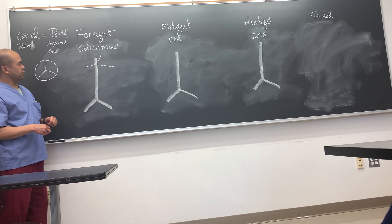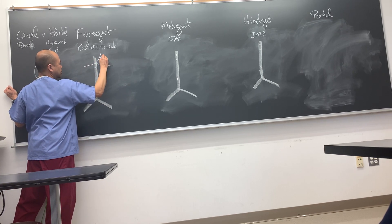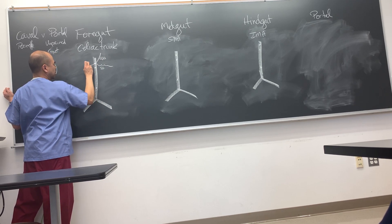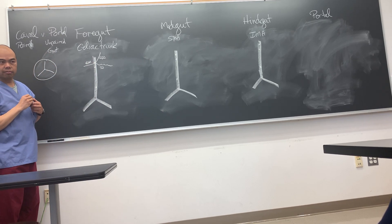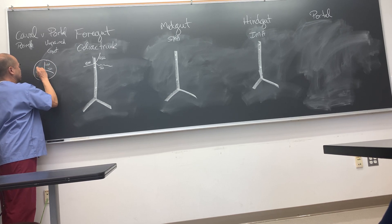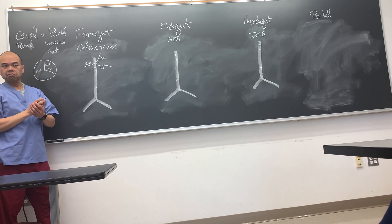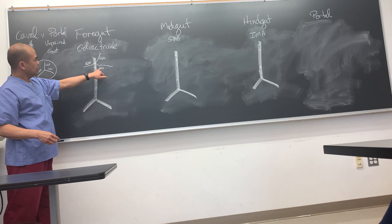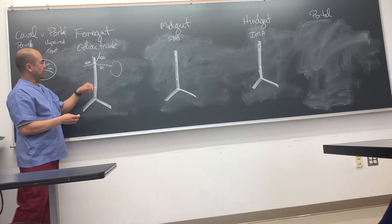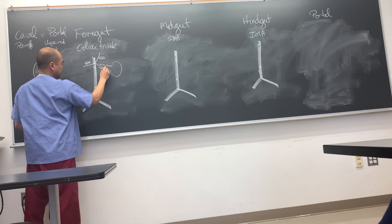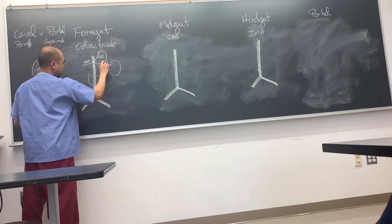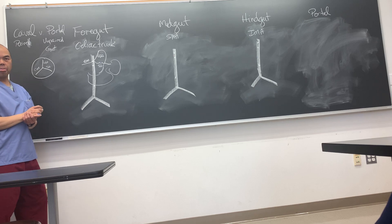The three arteries off the celiac trunk are the left gastric, the splenic artery, and the common hepatic artery. The splenic artery goes to the spleen - simple. The left gastric artery comes around and supplies the stomach, going to the lesser curve of the stomach.